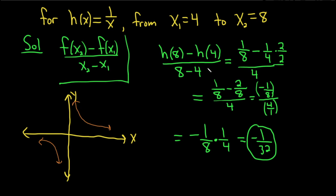And we found the average rate of change from 4 to 8. So let me use a different color here. Say this is 4, and say this is 8. So if you draw a line and you go from here to here, this line that connects these two points is called the secant line.